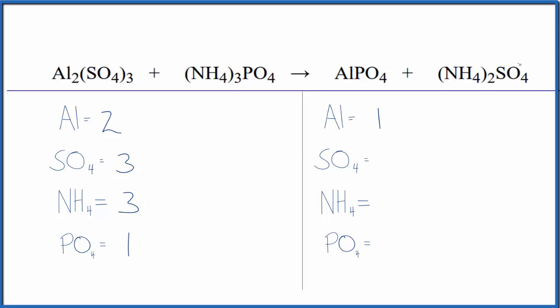Product side, we have one aluminum, we have one sulfate ion, two of these ammonium ions, and then just one of the phosphate ions. So this is a lot neater, and it's going to make it a lot easier to balance the equation.